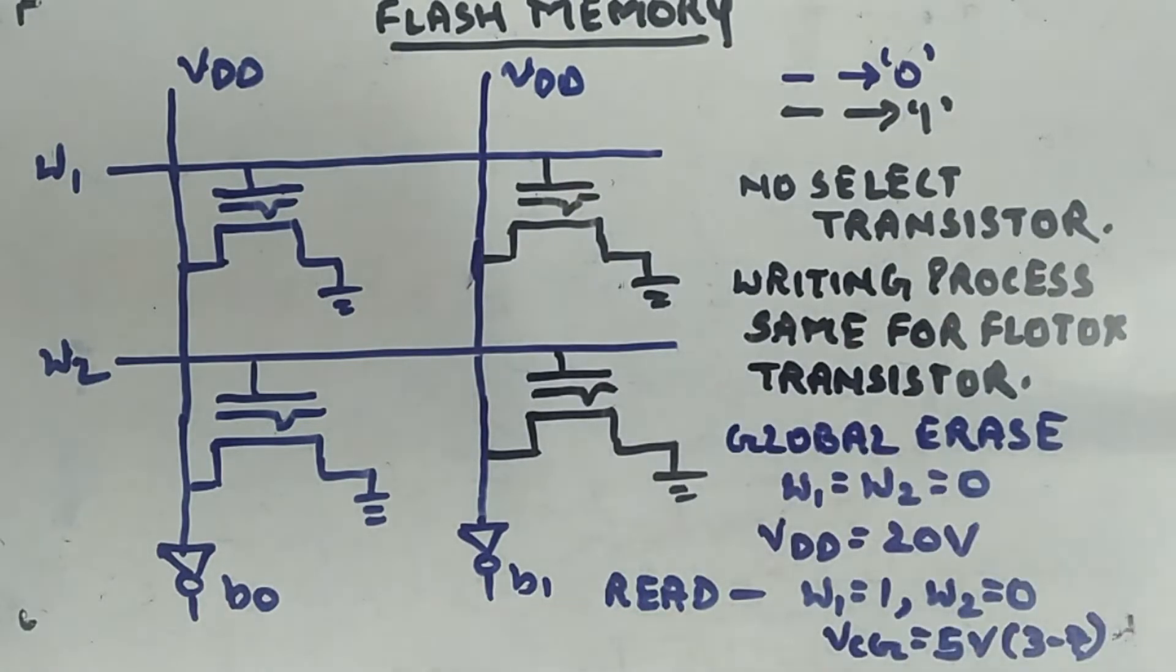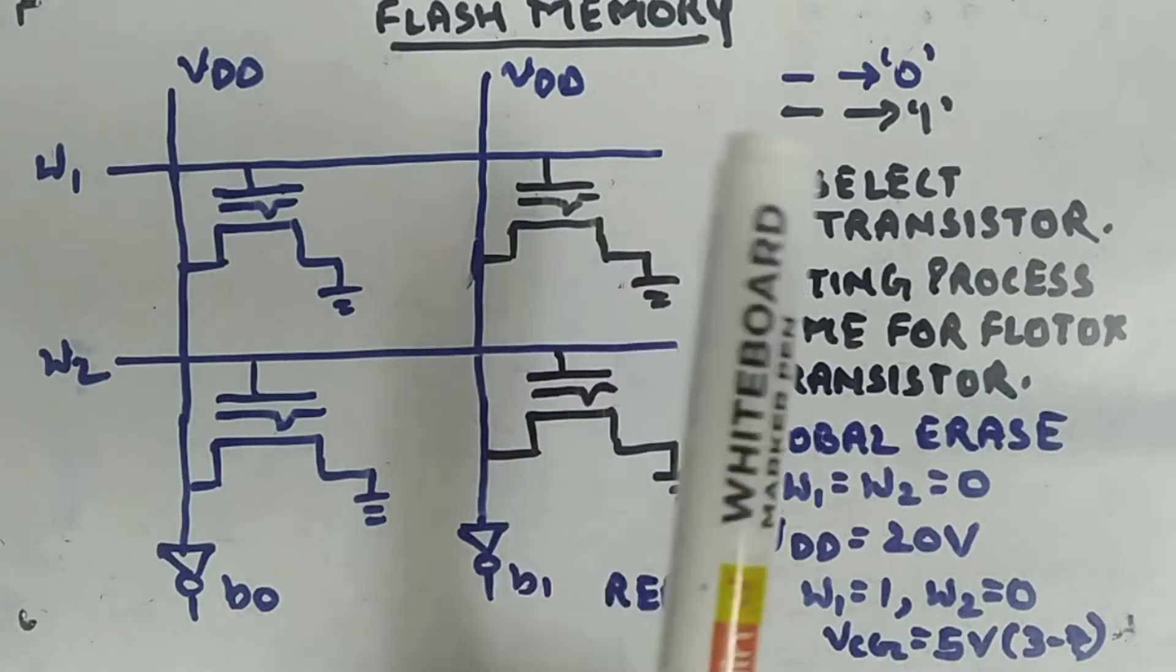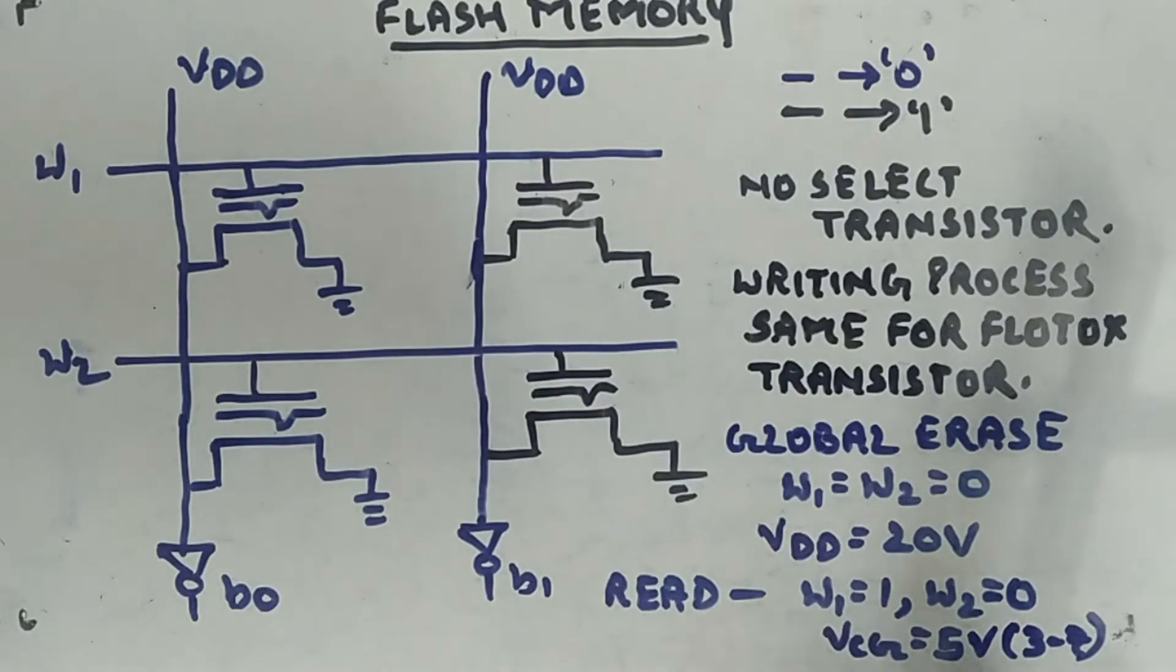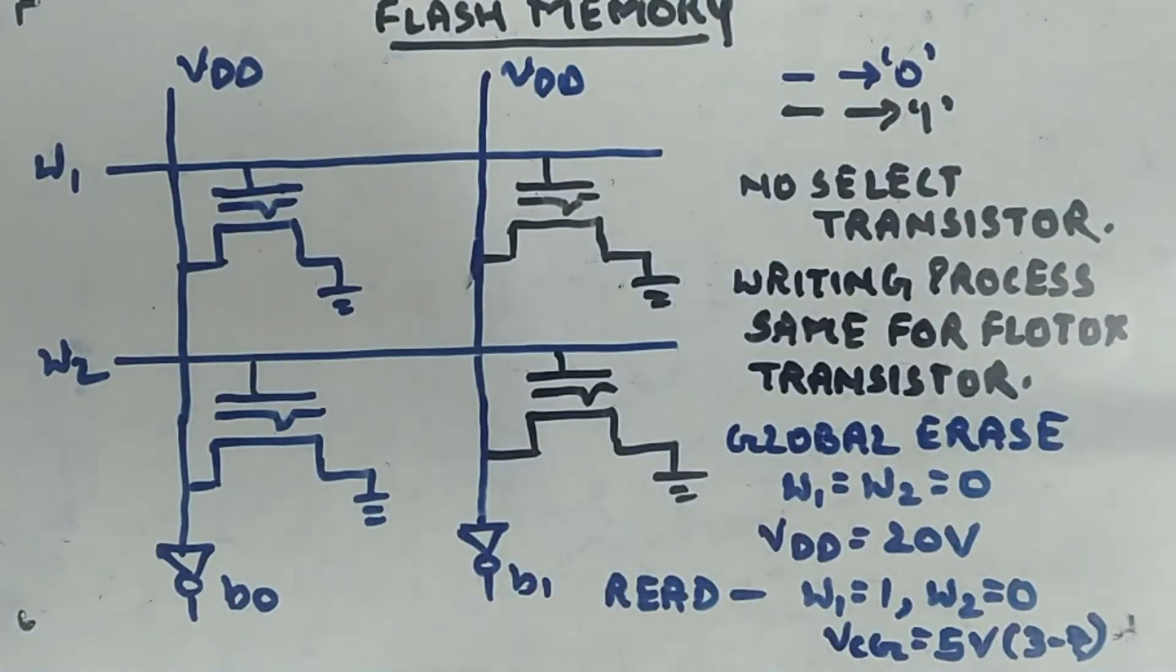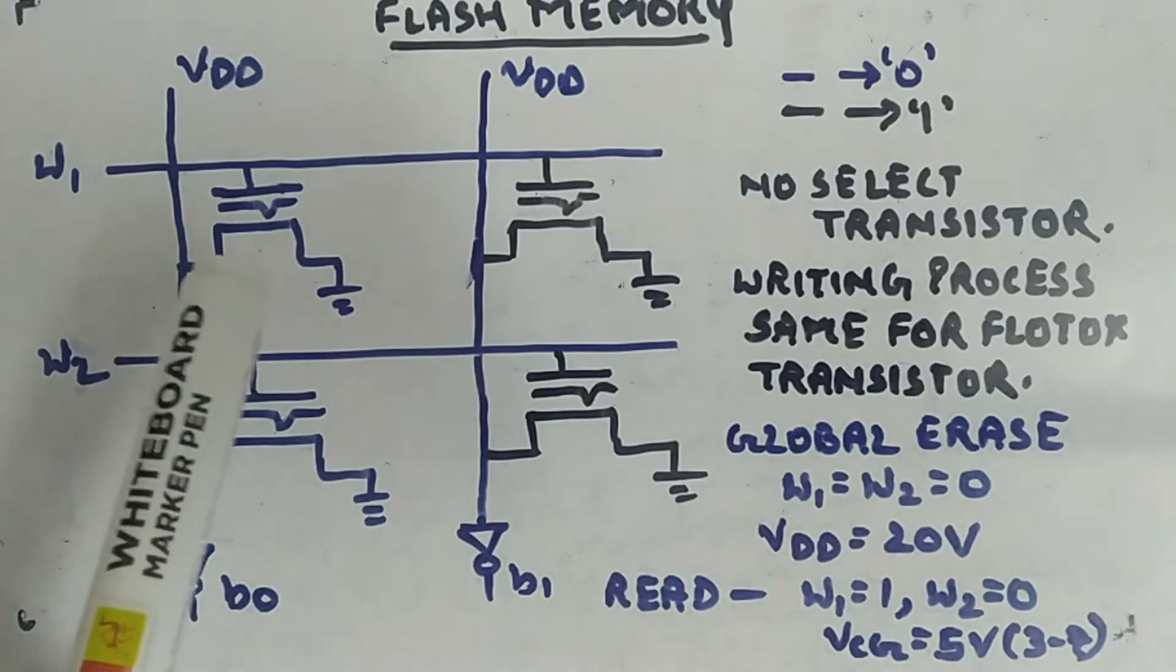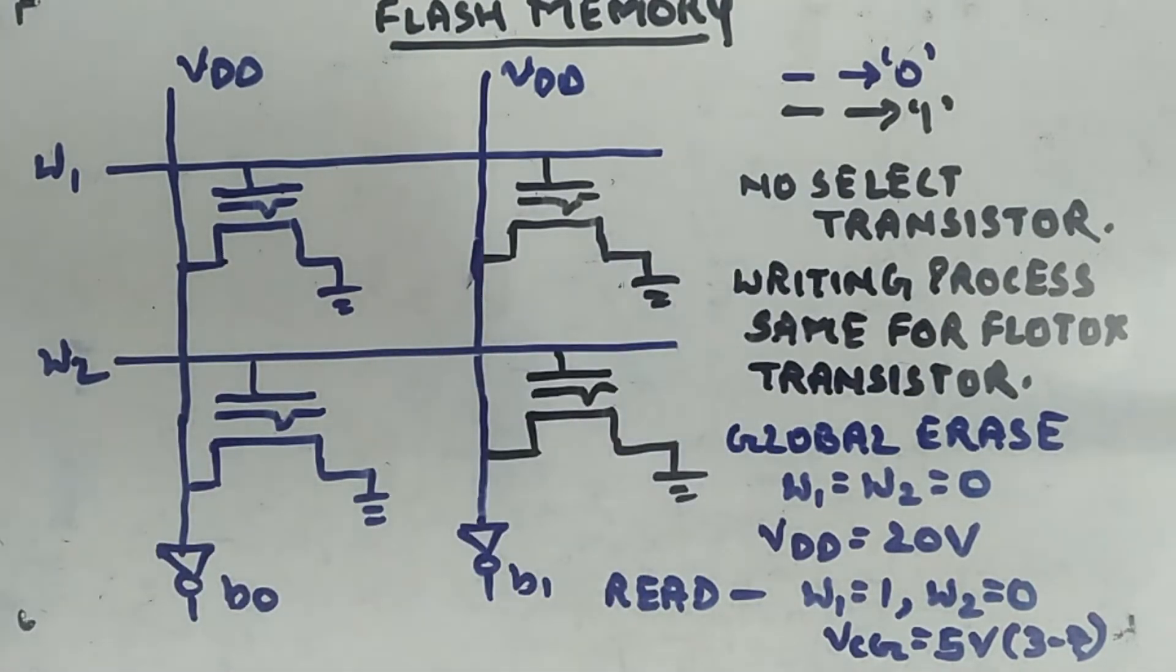That's how you can erase - the whole column will erase together because you're not having a select transistor. Hence you don't have any other word line as well. The job of the second word line was to select a specific transistor, meaning a specific bit, but you're not able to do that.